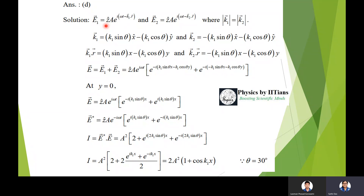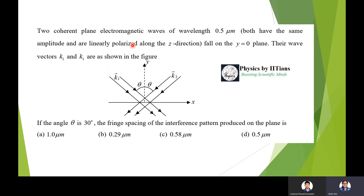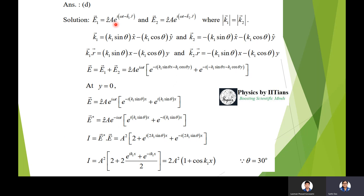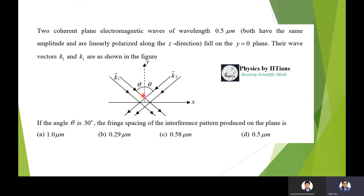We write the electric fields: E1 for wave vector k1, E2 for wave vector k2. The electric field is along z-axis, so E1 = z-cap · A · e^(iωt − k1·r), where k1 is the wave vector. Similarly, E2 = z-cap · A · e^(iωt − k2·r), also polarized along z. The magnitudes of k1 and k2 are the same.